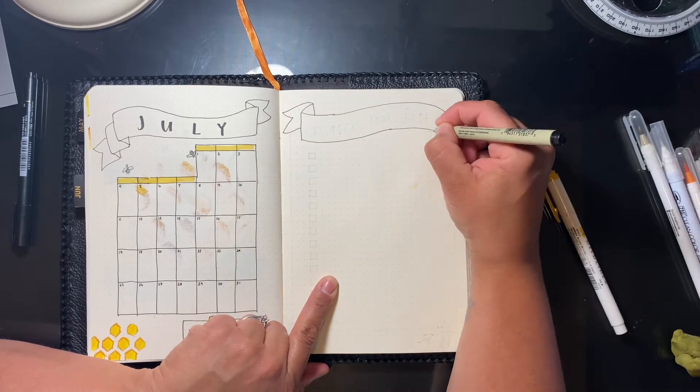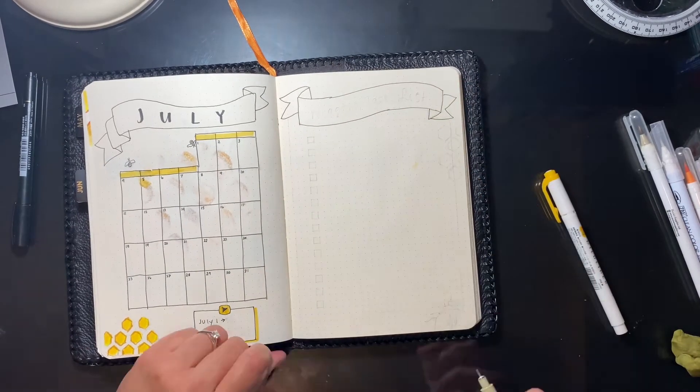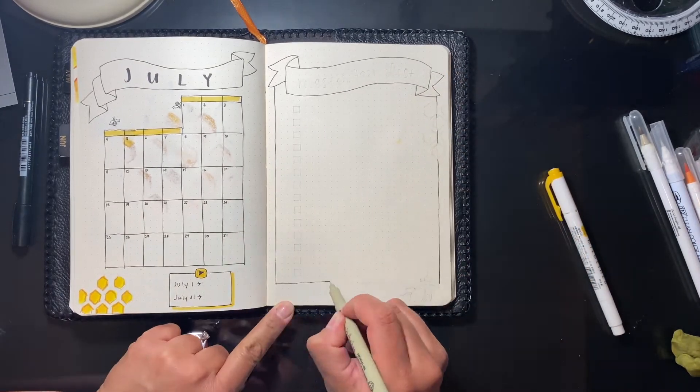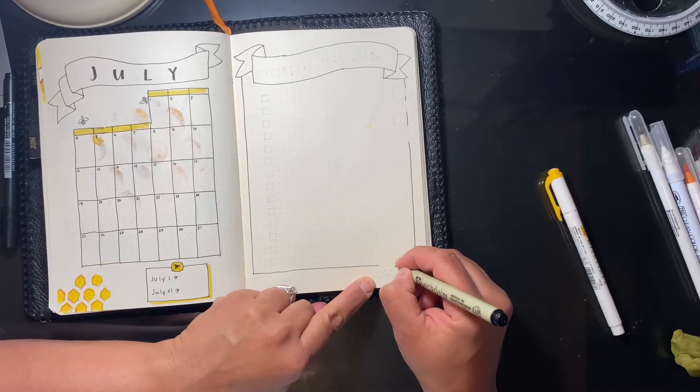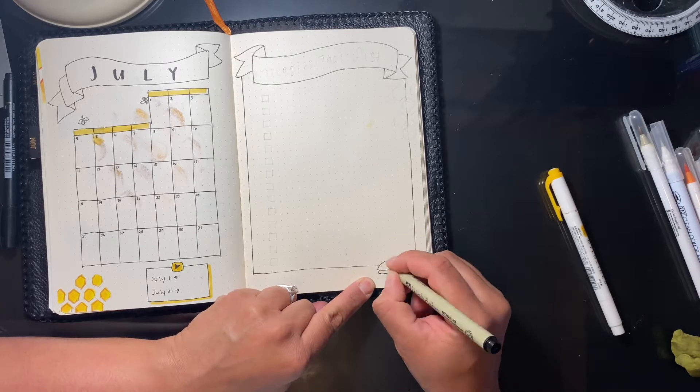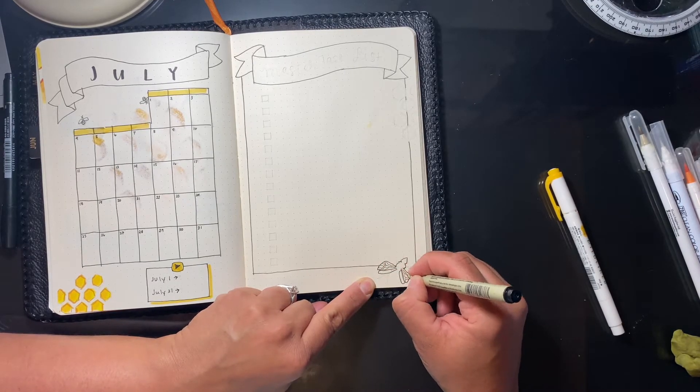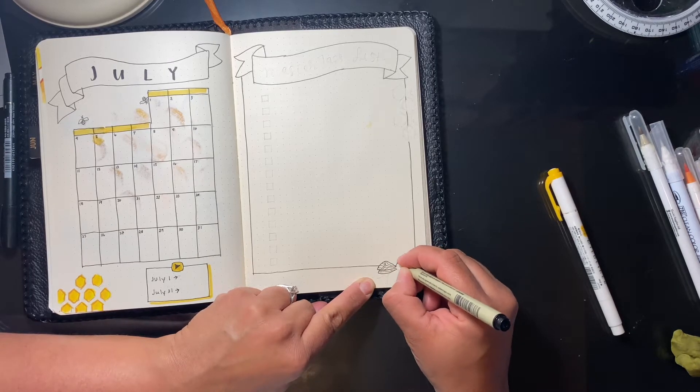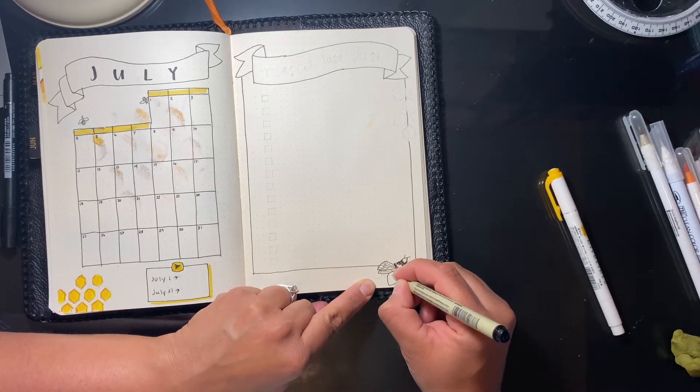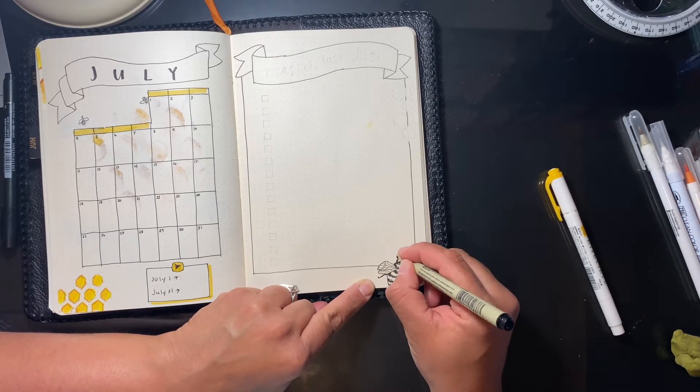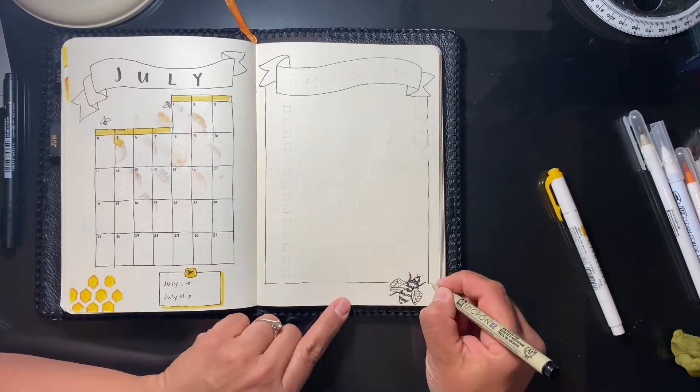This page will be my master task list. Normally what I do is on my calendar page, it would be a full page, but it doesn't take up all the room, so I usually do a tiny monthly task list on one side of the page. I like this because it's changing it up and I don't get so bored. I decided to decorate the border a little bit with a few honeycombs and a bee.